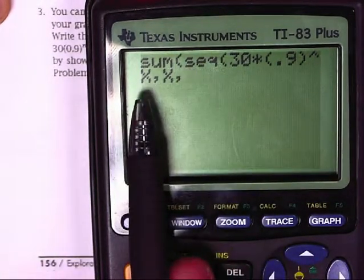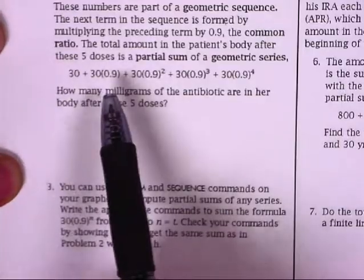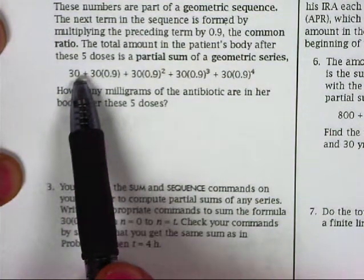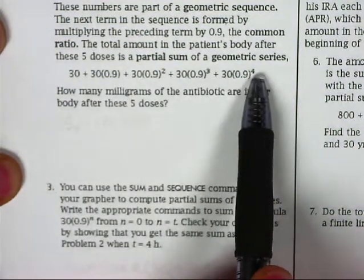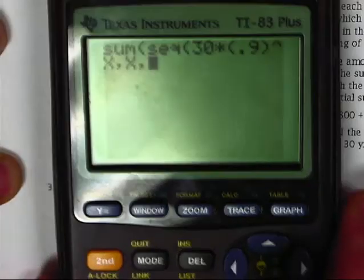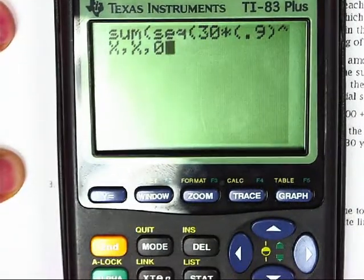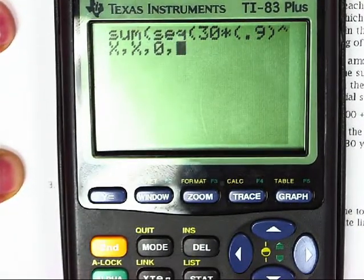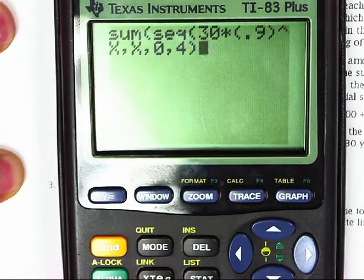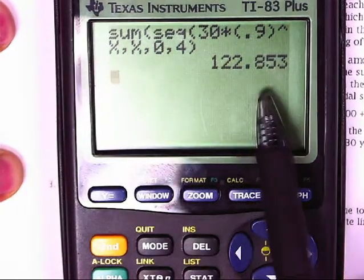That should be familiar from some integrals and derivatives that we do with our calculator. Then you hit the comma button, and then it's going to be where you want your variable to start and where you want your variable to end. In this particular problem, we have 30 as our first term, which would be 0.9 to the 0, and we have 4 at the end, so that's 0.9 to the 4. For this problem, we'll have 0 as our first variable, then we hit comma again, and then 4 as our last variable. Close the parentheses, hit enter, and it's going to add all those things for you, and you get 122.853.